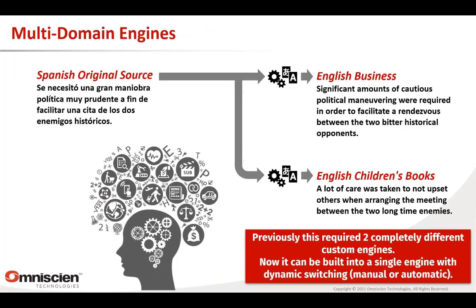Philip also mentioned multi-domain engines. In the past we had different engines for different domains. We have one Spanish input sentence and two different output sentences — business style and children's style — from the same input. We used to switch engines; now we can build all of this into a single engine and switch between writing styles just by telling the engine what we want. We can set this up to automatically detect context or writing style using classifiers, or manually switch between them. In a business context, you might have legal, technical documentation, general emails, marketing, and other styles all in a single engine that leverages each other but has an overriding style on top.